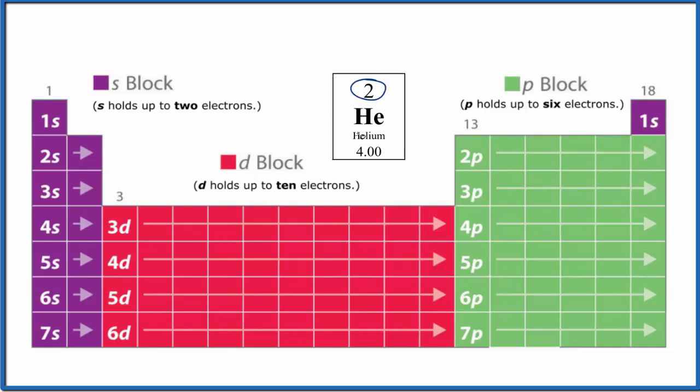It has an atomic number of two, that means it has two protons. But since it's a neutral atom here, in fact all of these elements on the periodic table are neutral, protons equals electrons. So we have two electrons.